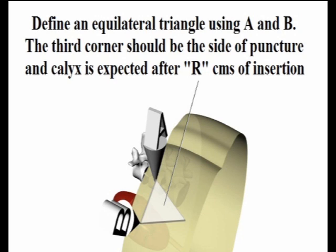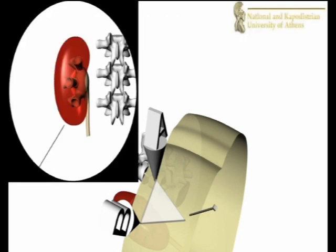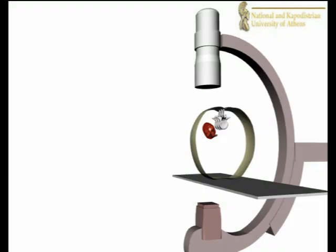From this point, the needle is advanced to the junction of the vertical plane and the 30 degree plane. Access is achieved at the junction of all three axes, hence the term triangulation.